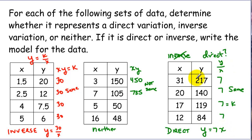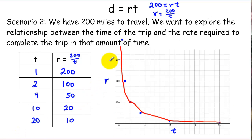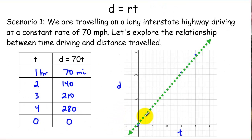The most important aspects are how we analyze tabular data to decide if it's direct or inverse variation. If x times y is a constant, it's an inverse variation. If y divided by x is a constant, it's a direct variation. If neither is true, it's neither. From a graphing perspective, inverse variations have a hyperbolic shape, while direct variations are linear functions that pass through the origin. Have a great day and good luck with analyzing variations.